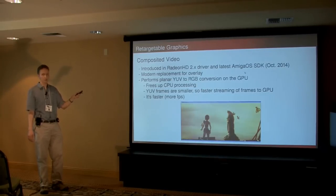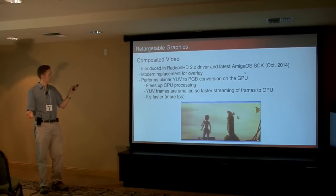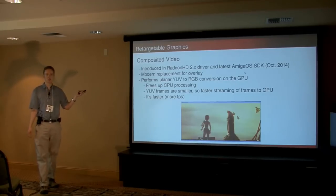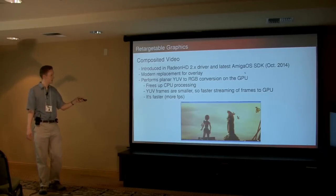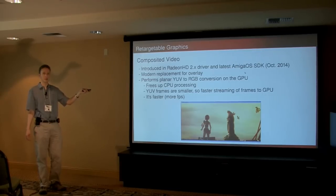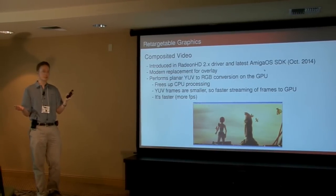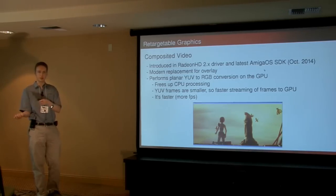Moving along even further, the next step was that the new Radeon HD cards don't have hardware overlay anymore, and we still wanted to have slightly accelerated video playback. So in the 2.0 Radeon HD driver, we introduced composited video. What that does is the composite tags function can now read YUV bitmaps that come out from the video decoder directly and do the YUV to RGB conversion directly on the GPU. That offloads it off the CPU, freeing up the CPU for more stuff, and it actually speeds things up in a second way as well — the YUV frames are smaller, they're kind of compressed, so you've got less to transfer to the graphics card.